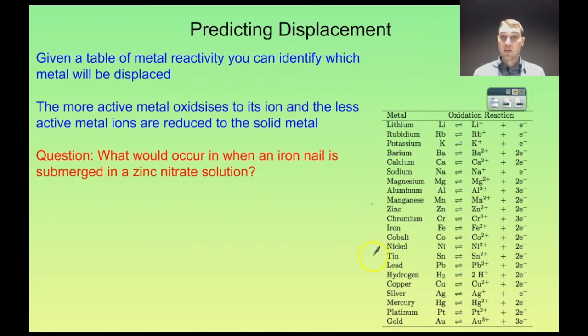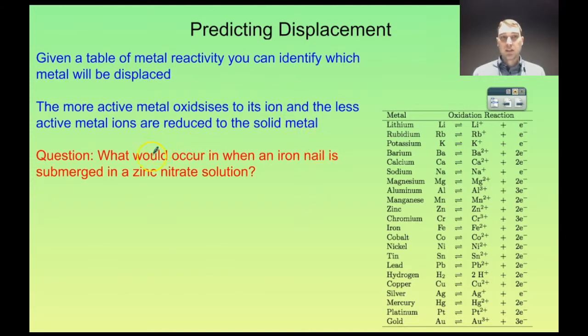So you can predict whether a metal will displace the ions of a less active metal by looking at an activity series. So over here we have an activity series that we could look at. The more active metal oxidizes to its ion, and the less active metal's ions are reduced to the solid metal.